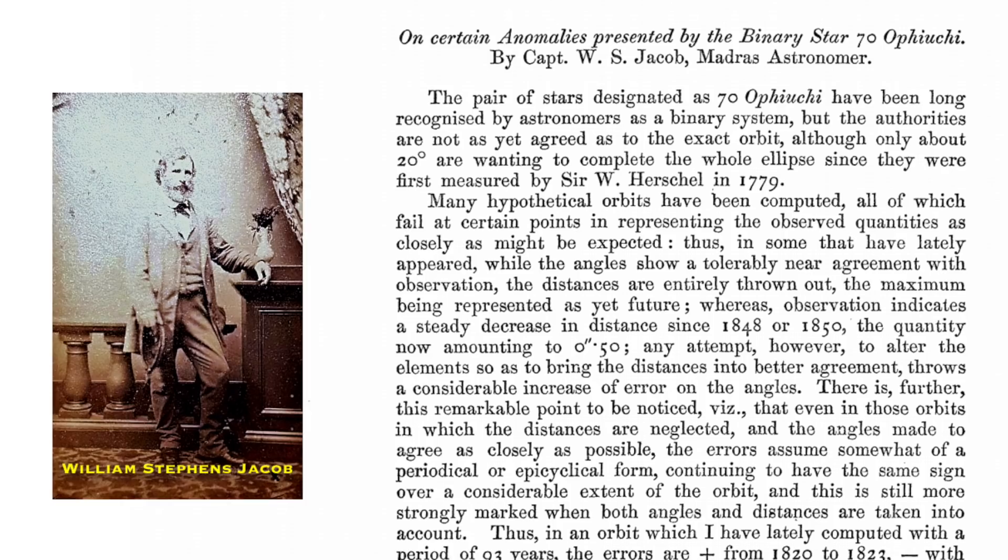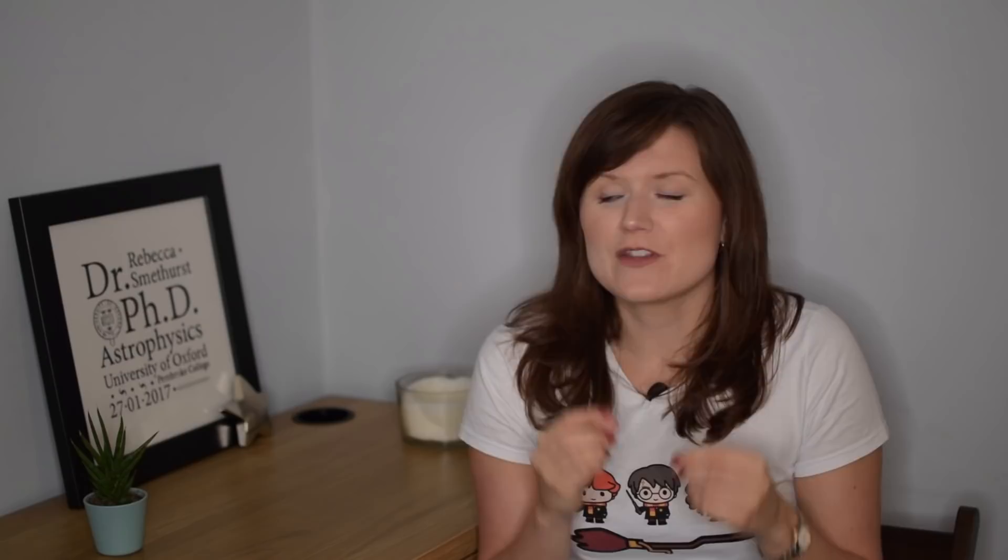William Stevens Jacob, as early as 1855, announced that he'd discovered a planet around the binary star 70 Ophiuchi. What he'd been doing was observing the positions of the stars in this binary system as they orbited around each other. He said their positions couldn't be explained if they were the only two bodies in this system. There had to be some unseen body, aka a planet, that was there disturbing their orbits.